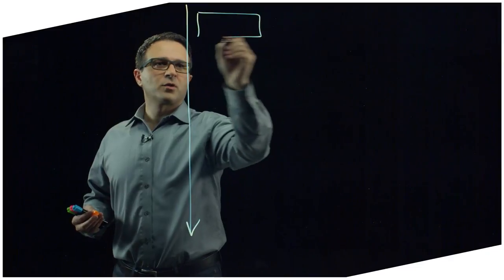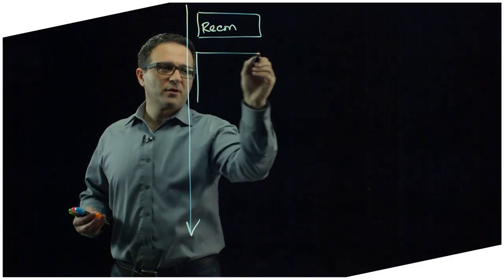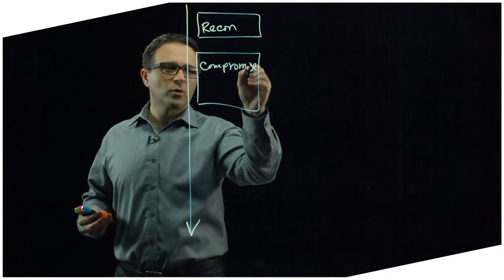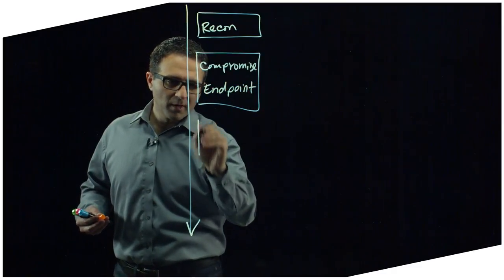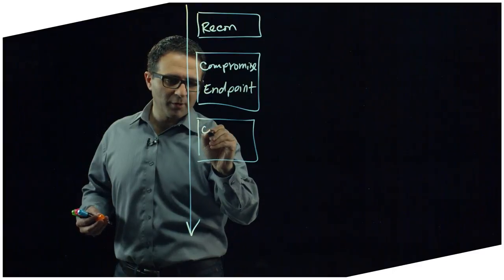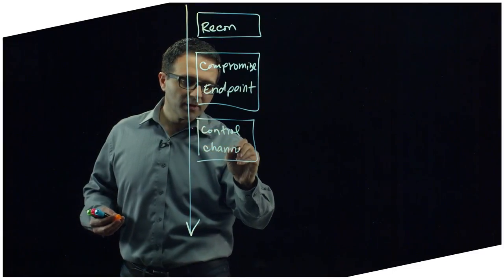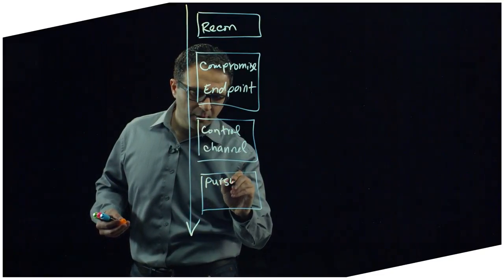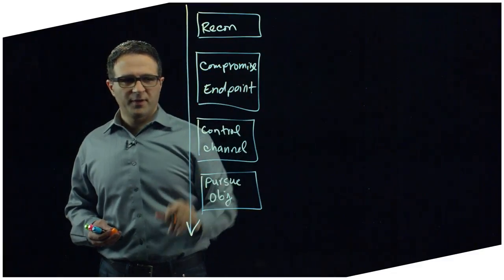When you look at an attack, typically it involves a first phase where the attacker is conducting reconnaissance in your environment, followed by a phase where they're compromising an endpoint in order to be able to gain a foothold or a beachhead in your environment from which they can launch the rest of their attacks. Then they typically establish a control channel which allows them to get instructions for how to pursue the remainders of their objectives.